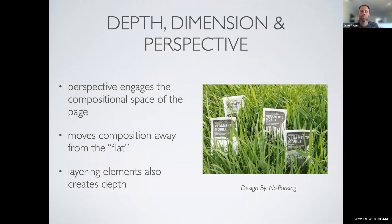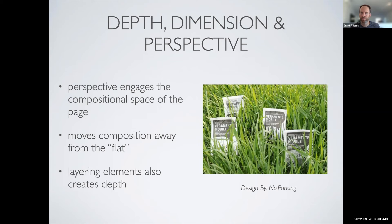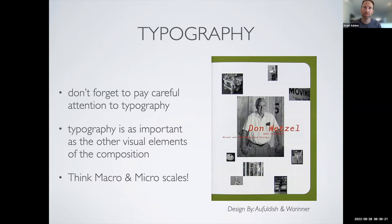You can also do this through perspective — things closest to you become more dominant and important, while things further away in the composition are less important. It moves the composition away from just the flat layout; we're using that third dimension and creating depth. Typography is just as important as all the other elements on the page — we spent a whole lecture talking about font choice and the little details: tracking, kerning, all of those things. Think both in macro and micro scales.